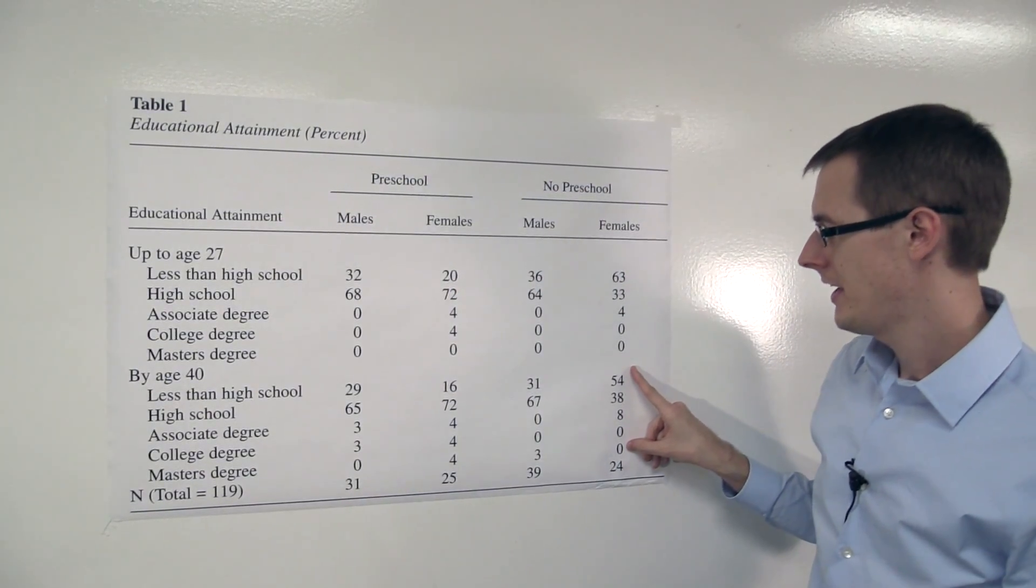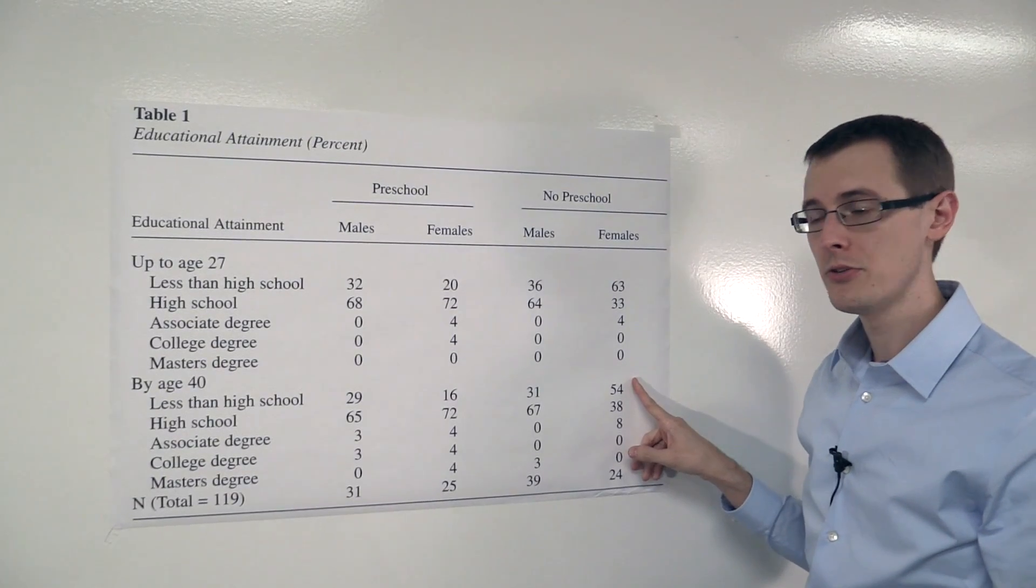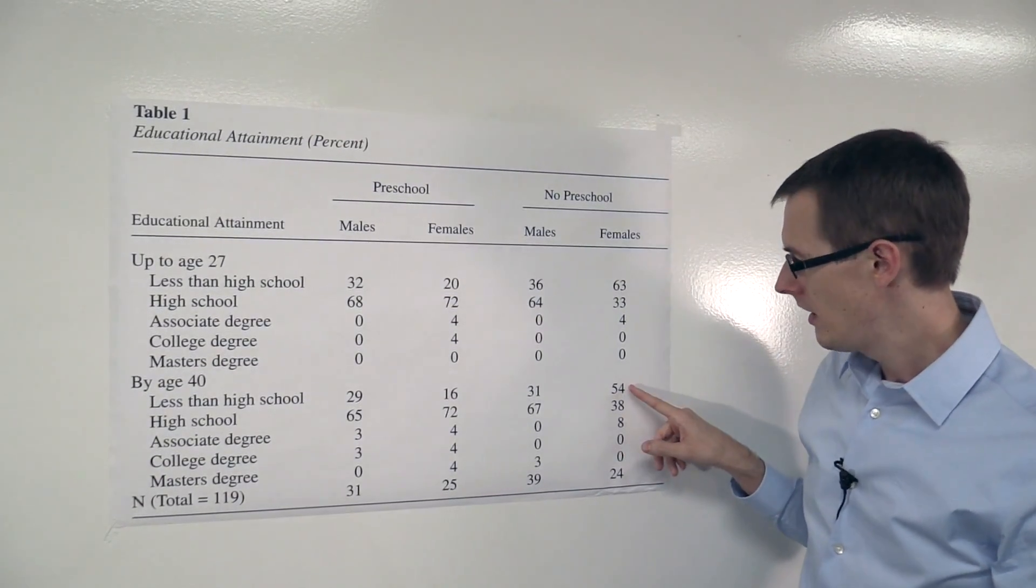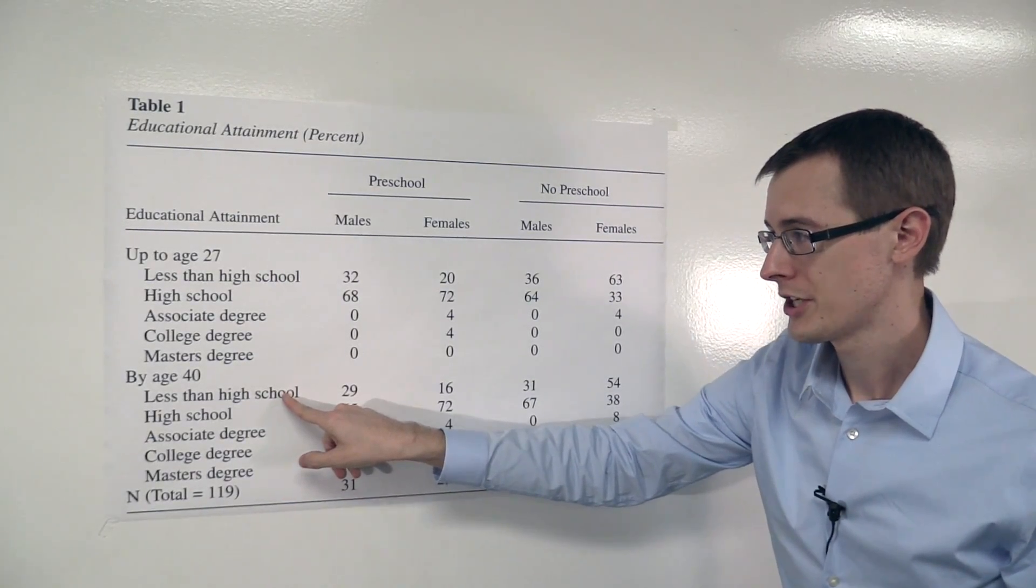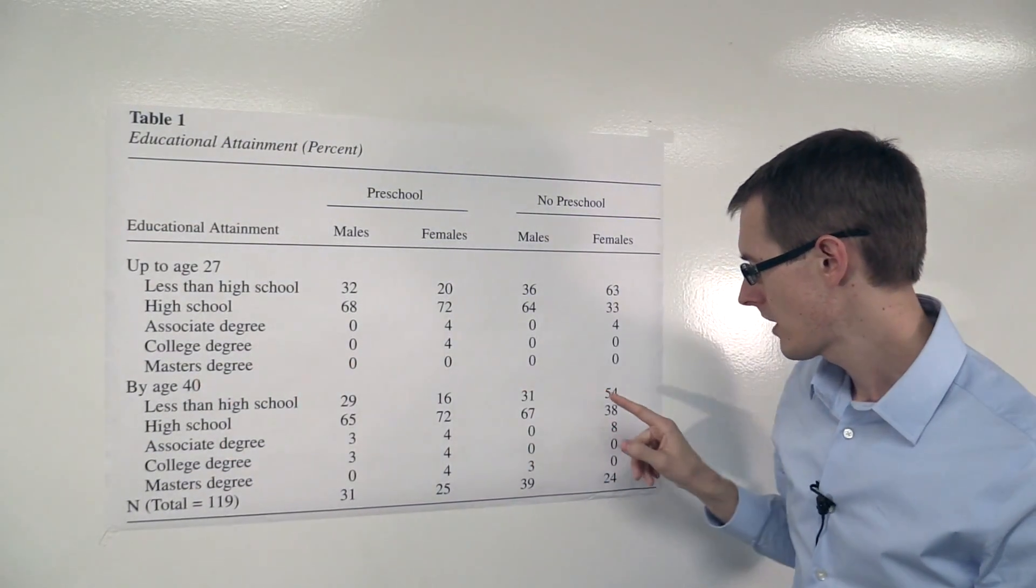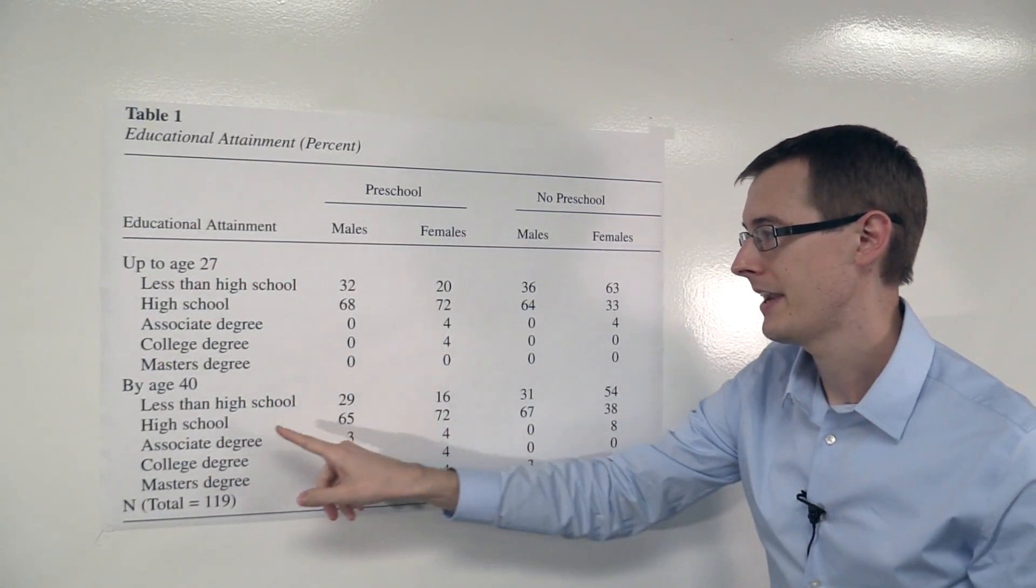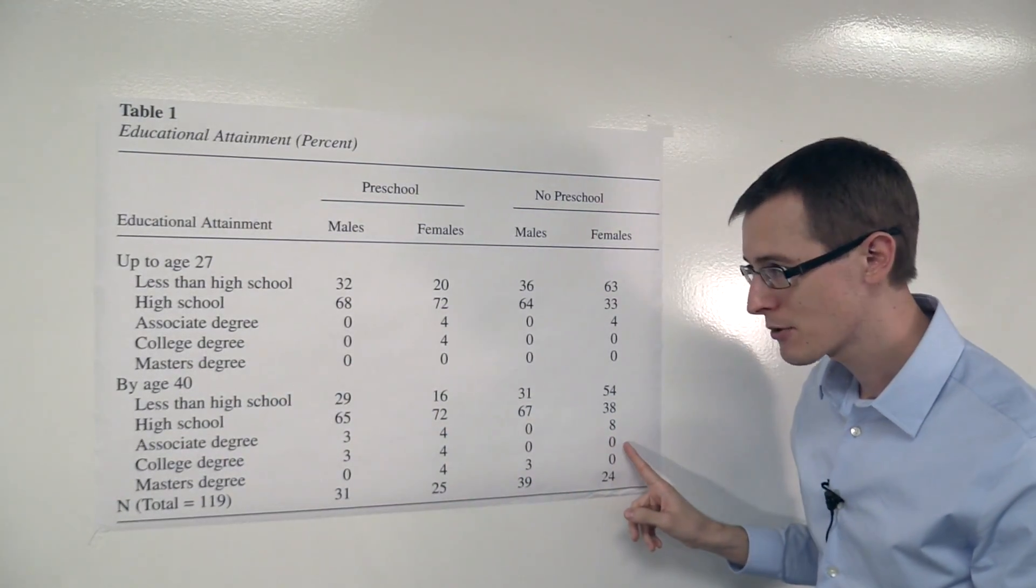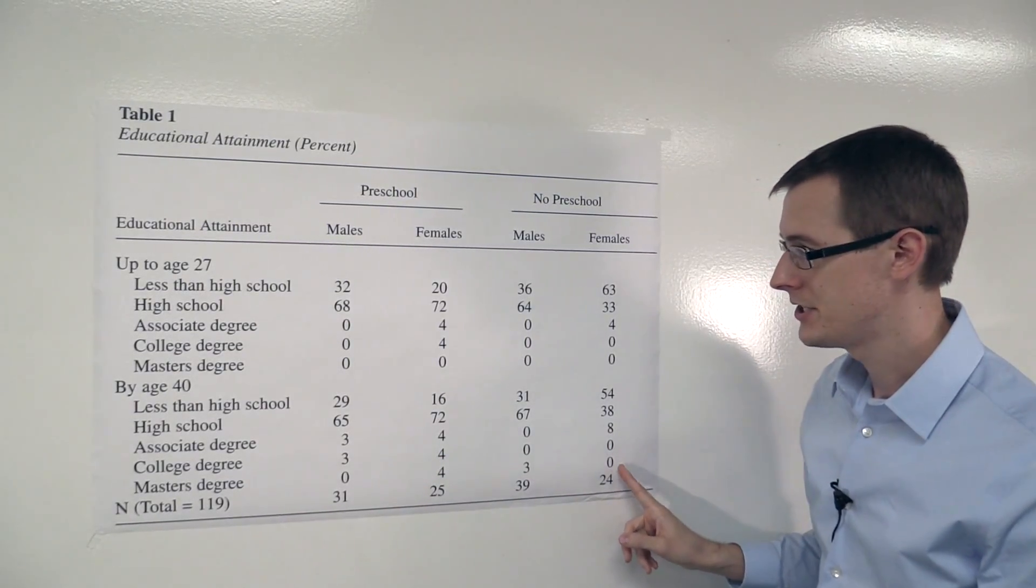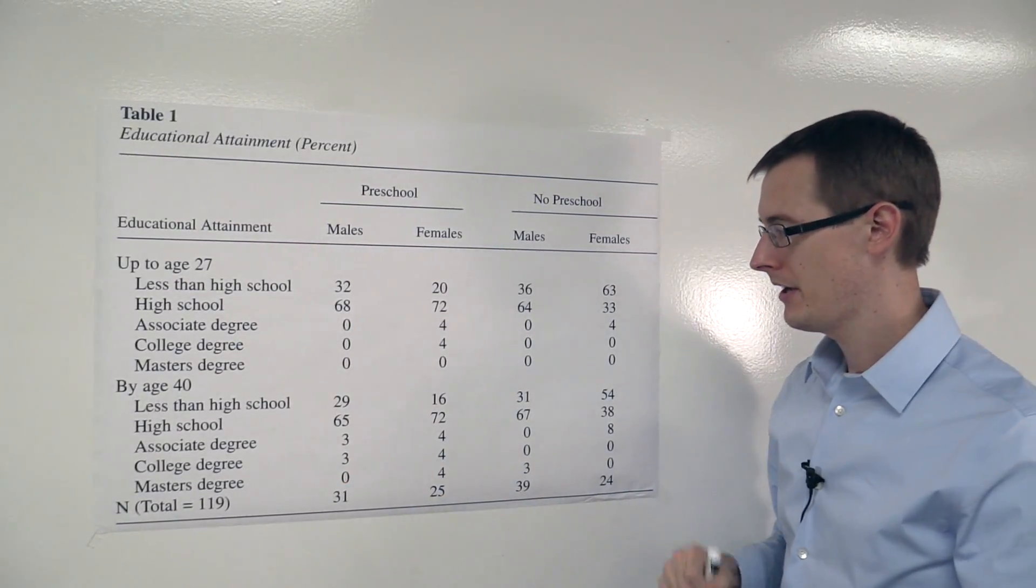Okay, so now let's look at the control group. These are females who did not get any preschool. 54% of them had less than high school education by the time they were 40. 38% had high school education by the time they were 40. 8% had an associate degree, 0% had a college degree, and 0% had a master's degree.